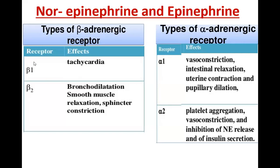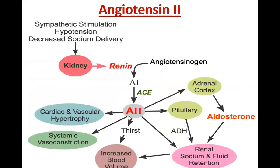Norepinephrine acts only on beta receptors. Beta-1 receptor stimulation causes tachycardia. Beta-2 whenever stimulated causes bronchodilation, smooth muscle relaxation, and sphincter constriction. Whenever beta is stimulated there will be increase in heart rate, but the vasoconstrictor effect will not be present. Vasoconstrictor effect is present only when epinephrine acts on alpha receptors.